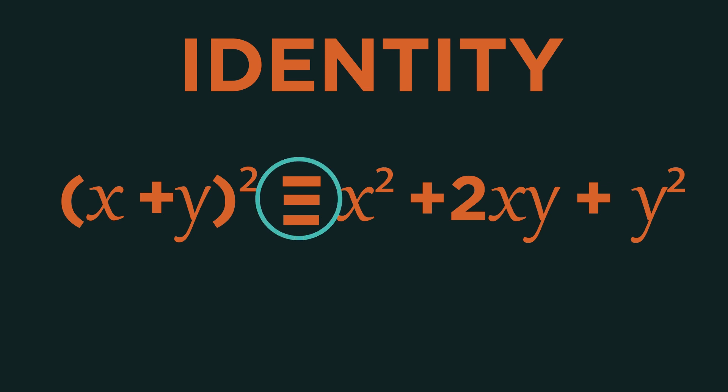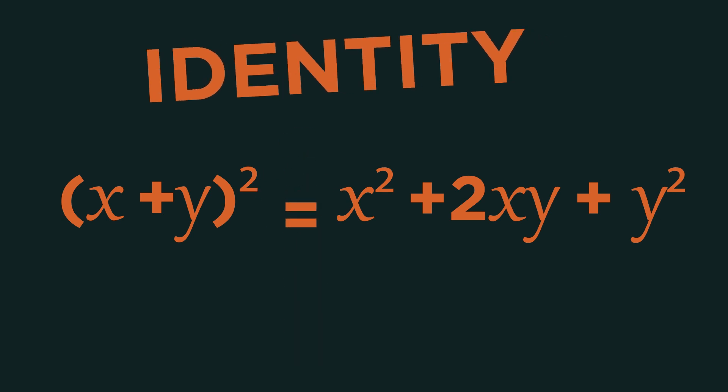Strictly speaking for identities we should use the three bar sign which means equivalent to. But it is common to just see the normal equals sign.